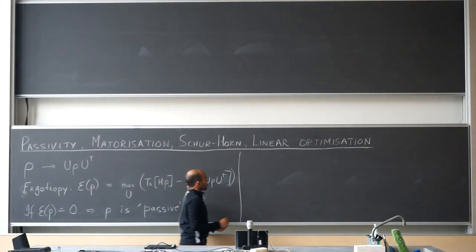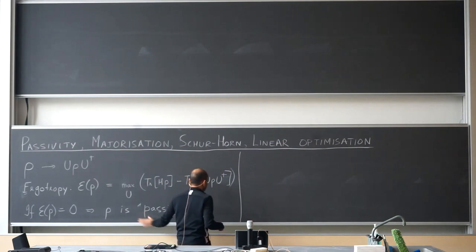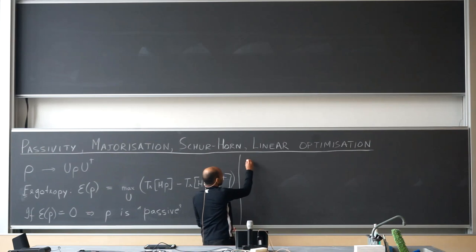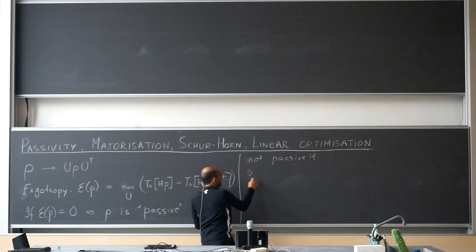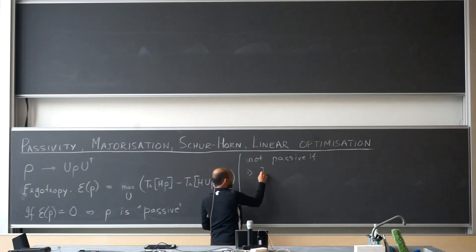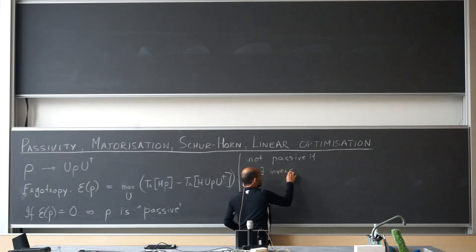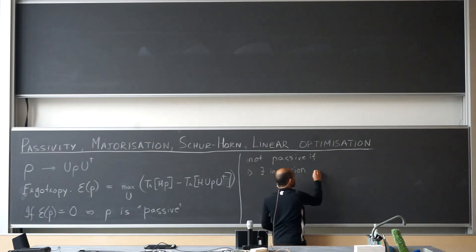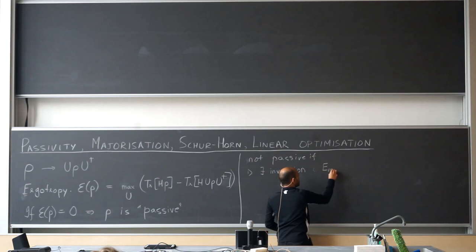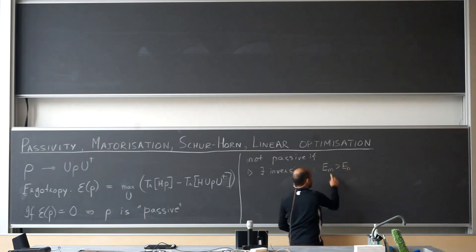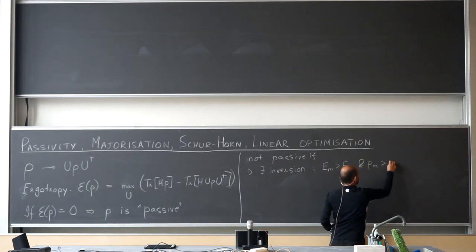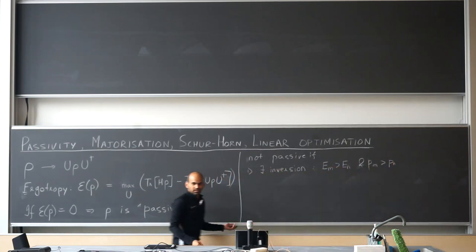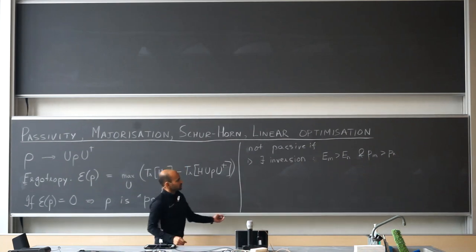Before I write down how you would classify a state as passive, I'd like to point out intuitively two ways you can see that a state cannot be passive. One simple way is if there is a population inversion: there is some pair of energy levels M greater than N such that the population in the high energy state is greater than the population in the low energy state. If I have this, I instantly know it's not passive.